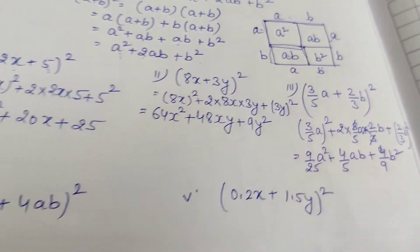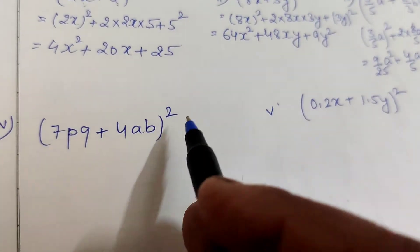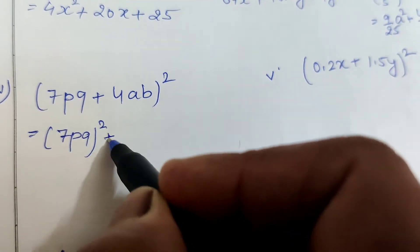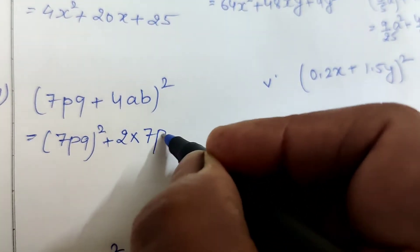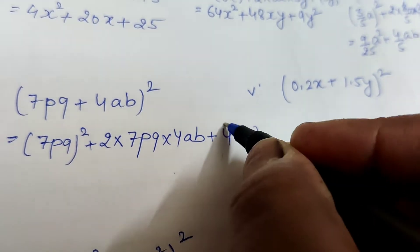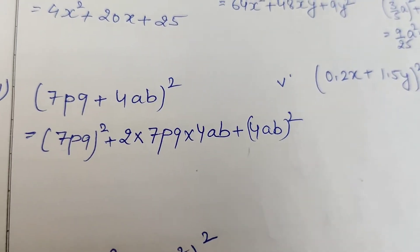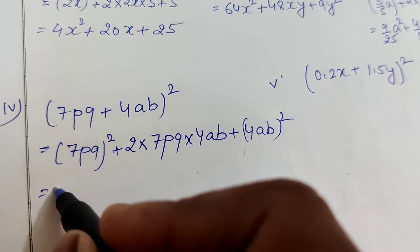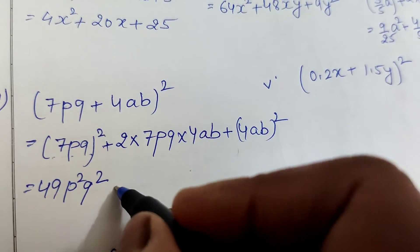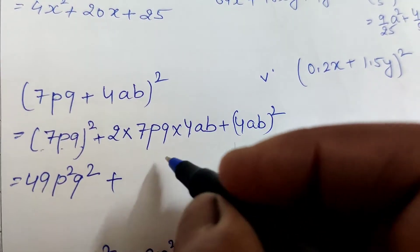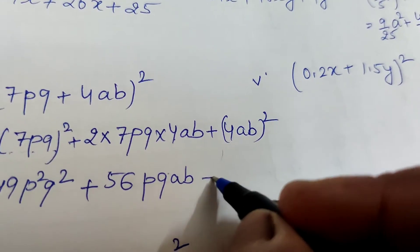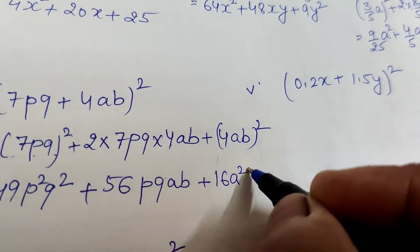The fourth question is (7p³ + 4ab)². Using the same process: square of the first number, plus twice the product of the two numbers, plus square of the second number. (7p³)² = 49p⁶. Then 2 × 7p³ × 4ab = 56·p³ab. And (4ab)² = 16a²b². So the answer is 49p⁶ + 56p³ab + 16a²b².